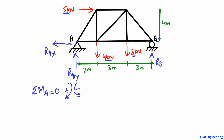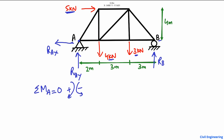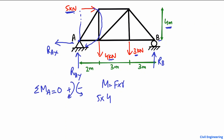The first load that creates a moment about point A is the 5 kN force. Moment equals force multiplied by the moment arm, so it is 5 kN multiplied by its moment arm, which is the vertical distance from the load to point A — that is 4 meters. This force produces a clockwise moment about point A, so it is positive.